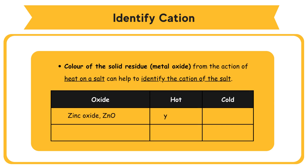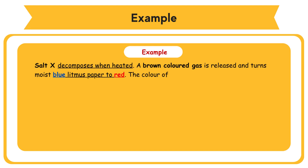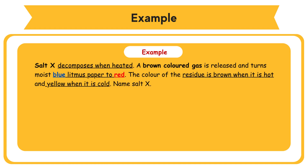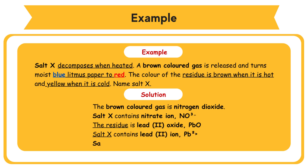The color of the solid residue (metal oxide) from the action of heat on a salt can help identify the cation. Zinc oxide, ZnO, is yellow when hot and white when cold. Lead(II) oxide, PbO, is brown when hot and yellow when cold. Example: A brown colored gas is released and turns moist blue litmus paper red. The color of the residue is brown when hot and yellow when cold. Name salt X. Solution: The brown colored gas is nitrogen dioxide. Salt X contains nitrate ion NO3⁻. The residue is lead(II) oxide PbO. Salt X contains lead(II) ion Pb²⁺. Salt X is lead(II) nitrate, Pb(NO3)2.